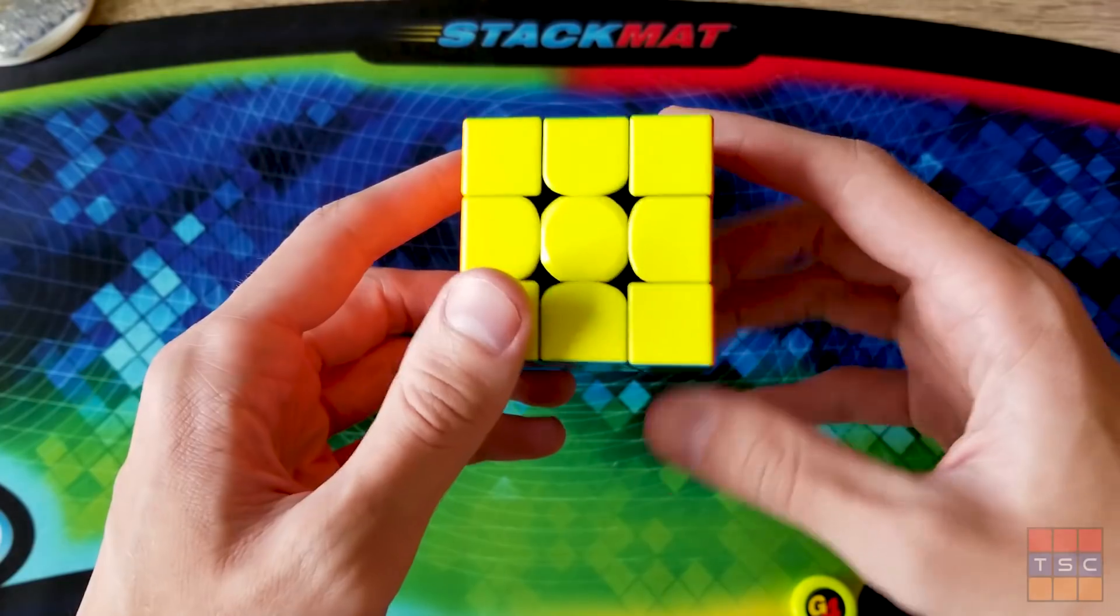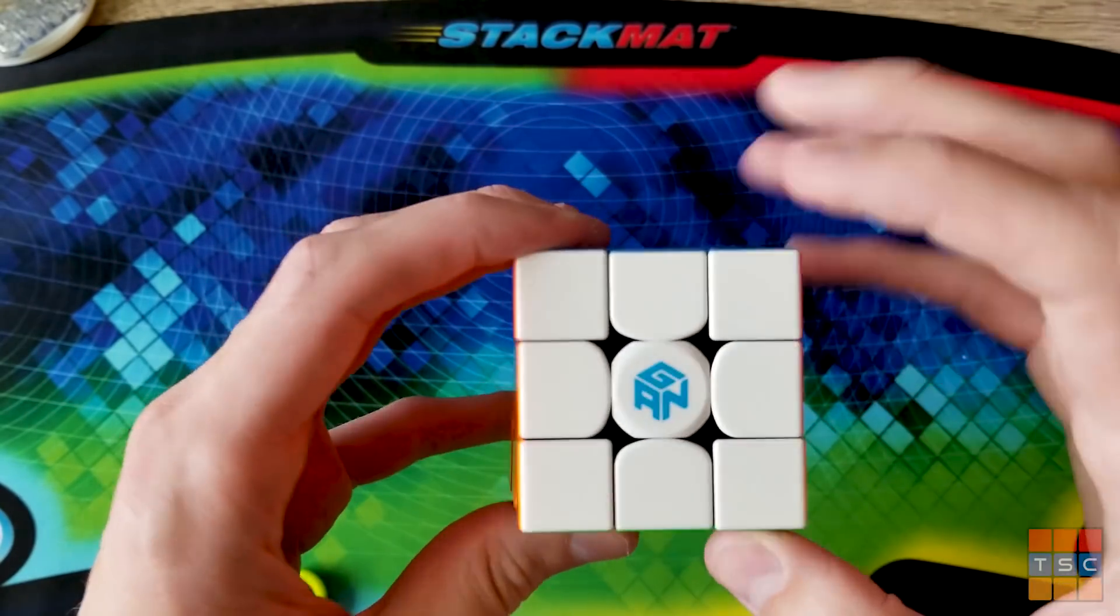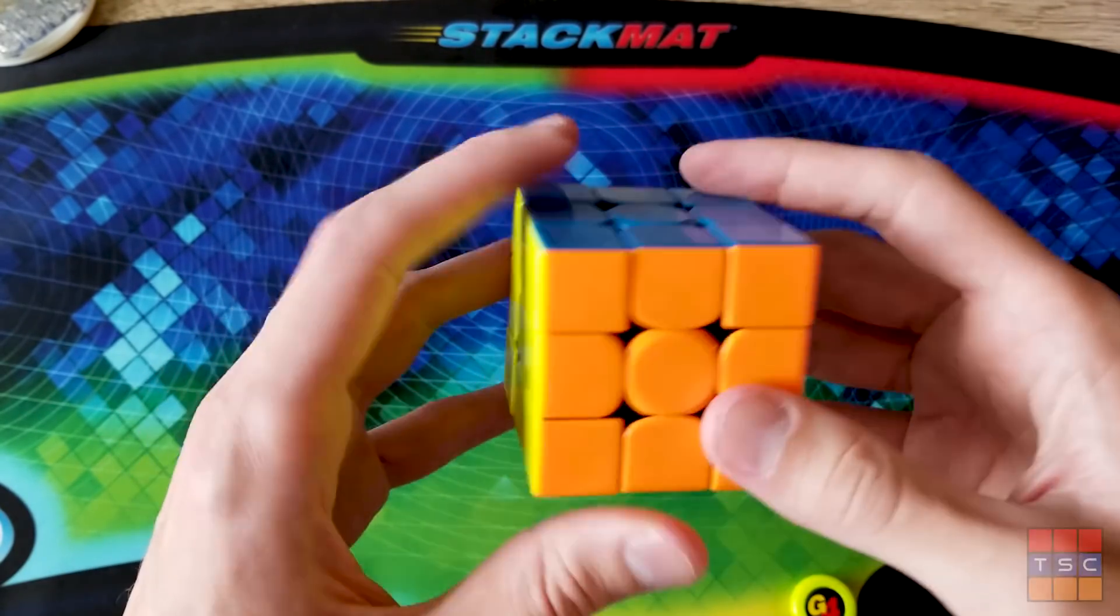All right, so here we have the puzzle itself. It is a stickerless GAN puzzle, which is really weird. One of the first things I noticed is the black internals. You can even just kind of tell looking through there.